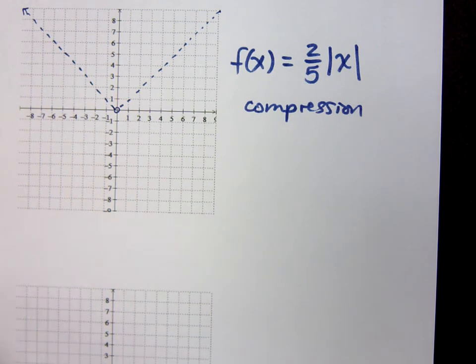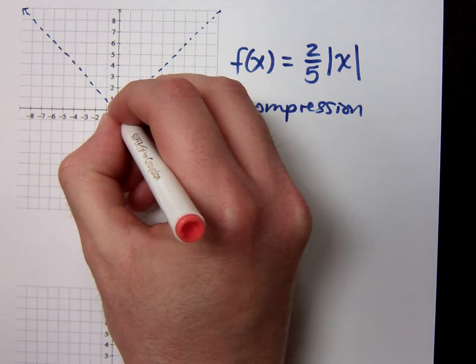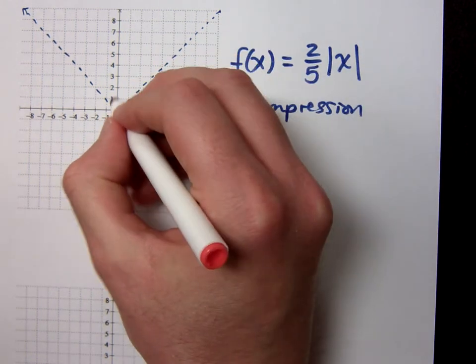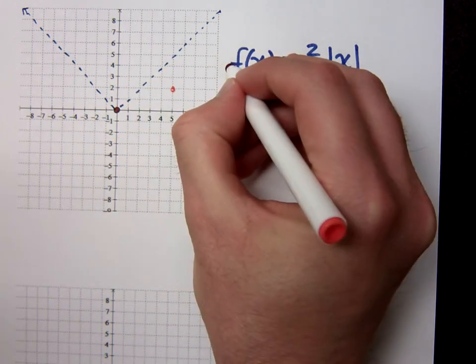But now that I've got the two-fifths here, I haven't moved up, down, left, or right at all, so its vertex is still at 0, 0, but use that two-fifths as a slope. And you would do what? Up 2 over 5, up 2 over 5 would be somewhere right there.